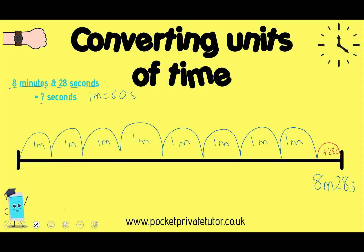Underneath I'm going to write how many seconds, since each minute is 60 seconds. After each jump starting from 0: jumping 1 minute gives 60 seconds, another minute is 120 seconds. I'm simply adding on in 60s because every minute is worth 60 seconds. To do all of this you just need to know your 6 times tables to help with your 60 times table.